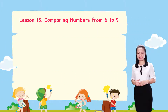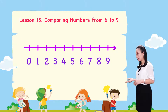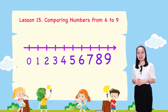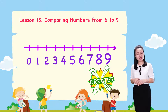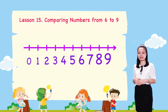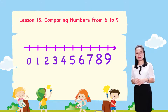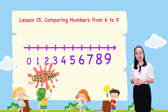Recall the number line. On the number line, a number to the right is greater than a number to the left. And a number to the left is less than a number to the right.